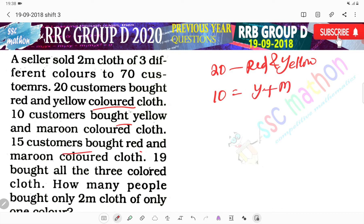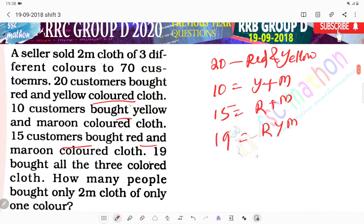15 customers bought red and maroon cloth. 15 customers bought red and maroon cloth. 19 bought all three colors - red, yellow, maroon. Now the question asks: how many people bought only 2 meter cloth of only one color?